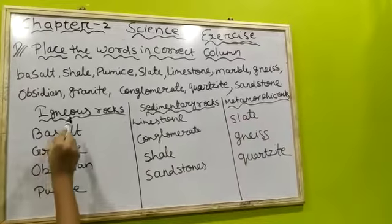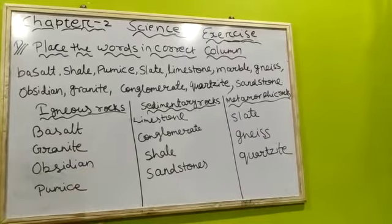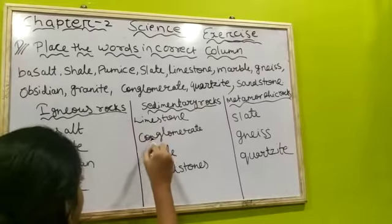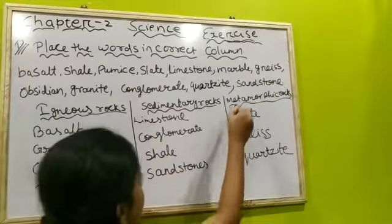Igneous rocks are: basalt, granite, obsidian, pumice. Sedimentary rocks are: limestone, conglomerate, shale, sandstone.